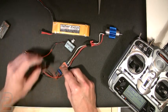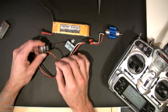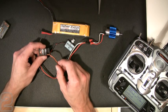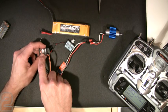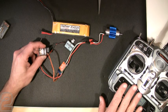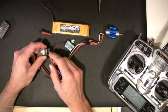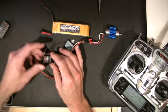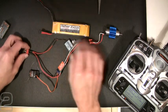I've already bound my receiver - we're not going to go over binding procedures as they're different for each radio manufacturer. But I've already bound this AR6100 receiver to this model memory in the Spektrum DX7, so I'm ready to go. Now all I have to do is connect my flight battery.